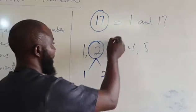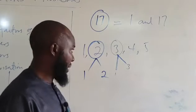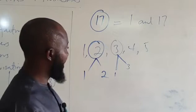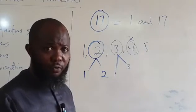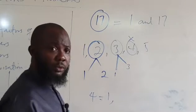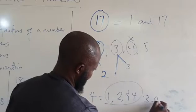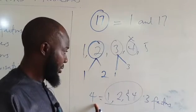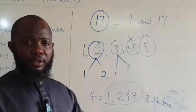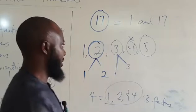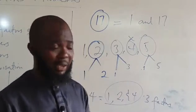3 is a prime number because no number can divide it except 1 and itself. 3 is an odd number and also a prime number. 4 is not a prime number because it has more than 2 factors: 1, 2, and 4 — that is 3 factors. 5 is a prime number because only 1 and 5 can divide it — just 2 factors. So 5 is both an odd number and a prime number.